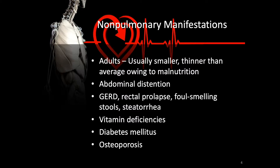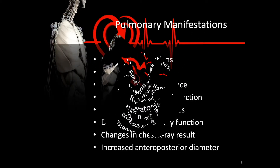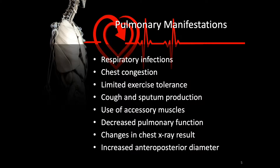Pulmonary manifestations include frequent respiratory infections, chest congestion, limited exercise tolerance, cough and sputum production, the use of accessory muscles while breathing, decreased pulmonary function tests — particularly the volumes — changes in chest x-rays, that is, the shape of the lungs and chest, an increased anterior-posterior diameter, and patients are also subject to becoming barrel-chested.